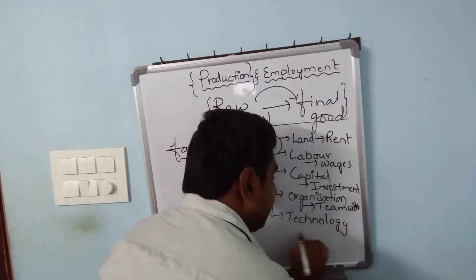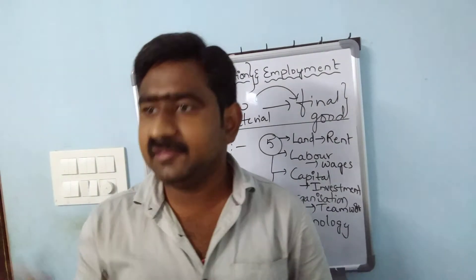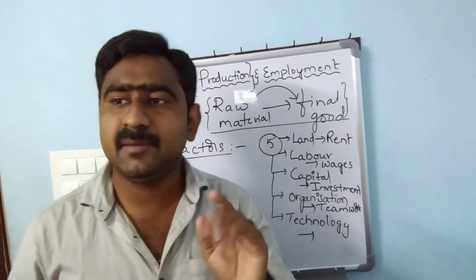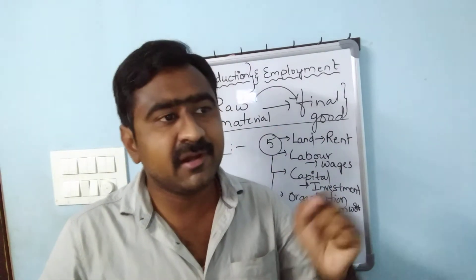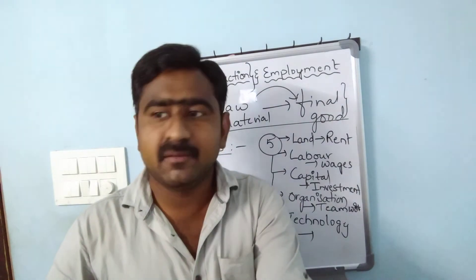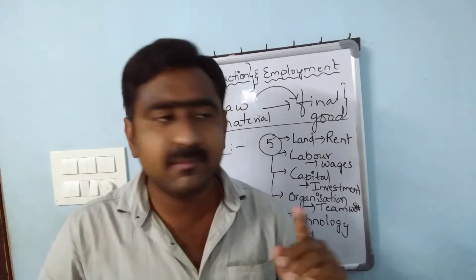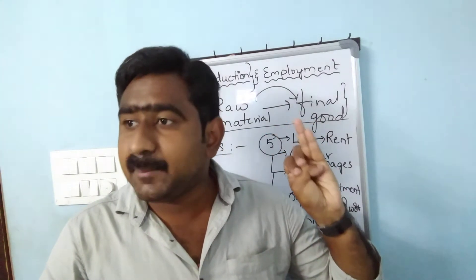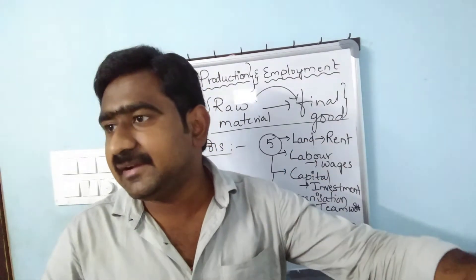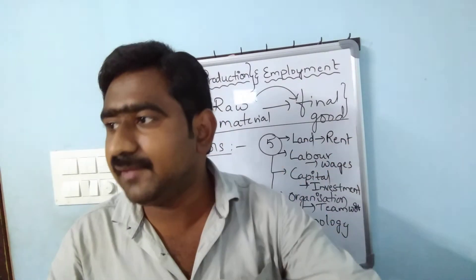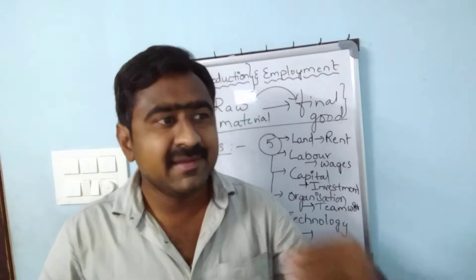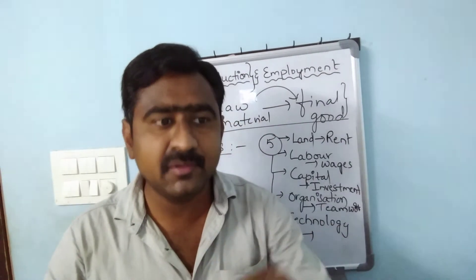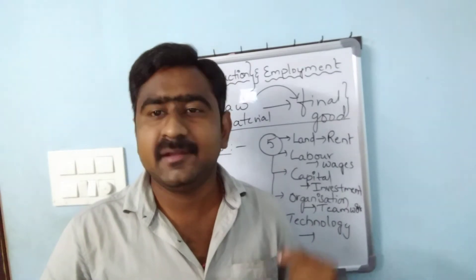The last factor is technology. Technology is a word related to development and knowledgeable skills — development based on technology, newly developed machines, latest models, and training. Organization is nothing but teamwork. Work will not be 100% successful without organization. So the five factors are: land, labor, capital, organization, and technology.